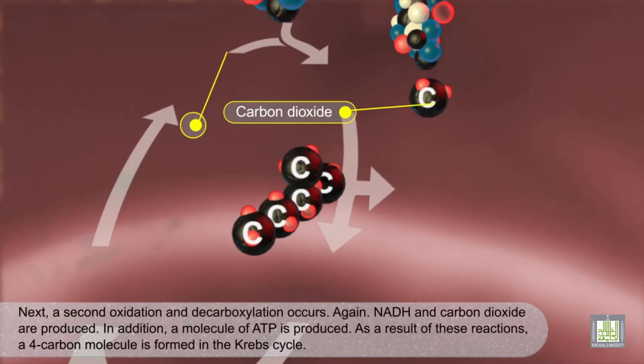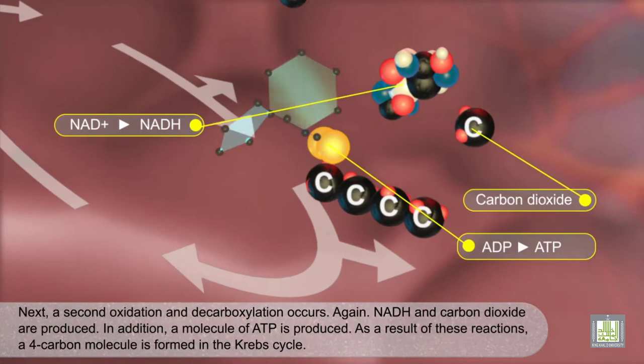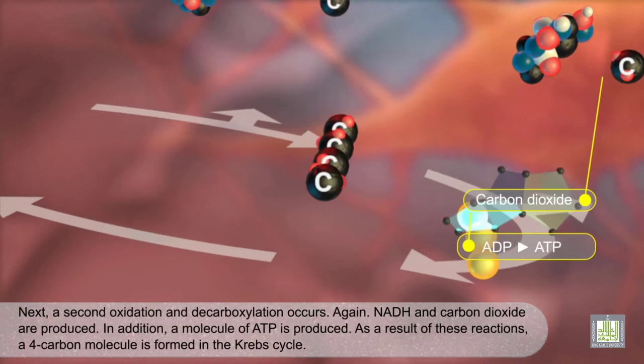Next, a second oxidation and decarboxylation occurs. Again, NADH and carbon dioxide are produced. In addition, a molecule of ATP is produced.